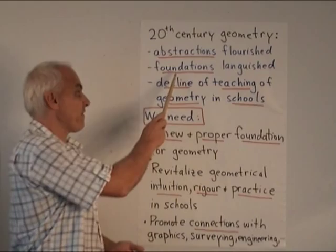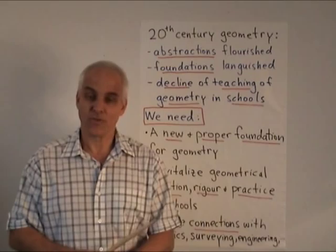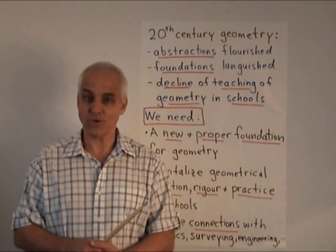At the level of teaching, there was a steady decline of geometry in schools. Throughout the century, the amount of geometry that was taught lessened and lessened, to the extent that now, in places like New South Wales, high school students almost learn no geometry. This is a dreadful state of affairs.